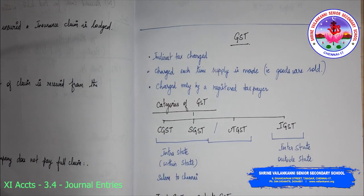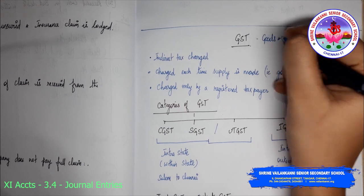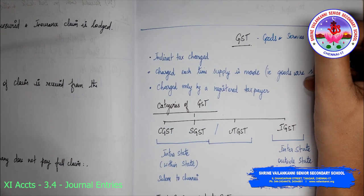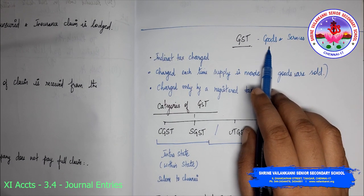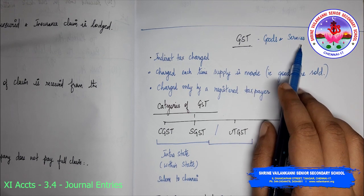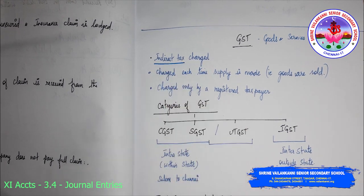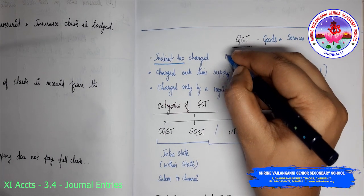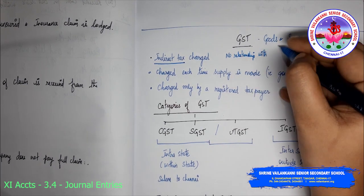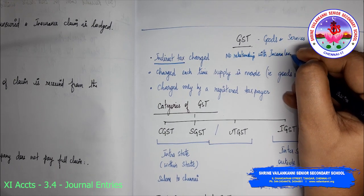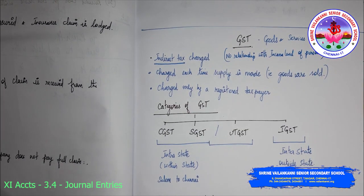First you need to understand what is GST. GST is nothing but Goods and Services Tax. This tax is levied on supply of goods and supply of services. It is an indirect tax charged — there is no relationship with the income level of persons.